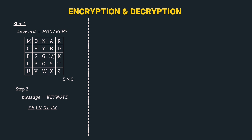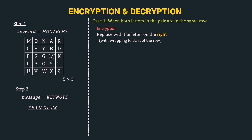We have three cases. Case 1: both letters in the pair are in the same row. For encryption, we replace each letter with the letter to its right, wrapping to the start of the row if needed. Taking the first diagram KE — we locate K and E in the matrix. Both are in the same row. K is at the end of the row, so wrapping gives us E. E moves right to F. So KE encrypts to EF.